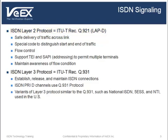LAPD is almost identical to the X25 LAPB protocol. The purpose of ITU-T recommendation Q921 is to provide safe, reliable transport for Q931, or Layer 3 signaling messages, to provide identification of frames, and to provide flow control mechanisms for data transmission and reception. It supports the Terminal Equipment Identifier, also known as the TEI, and the Service Access Point Identifier, also known as the SAPI, to permit service delivery to multiple terminals.